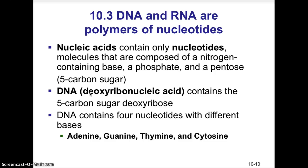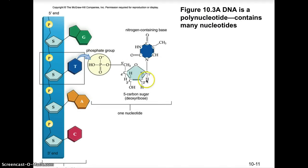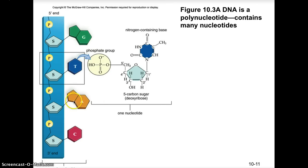DNA has 4 basic nucleotides: adenine, guanine, thymine, and cytosine — abbreviated A, G, T, and C. The typical structure of a nucleotide consists of the pentose sugar, a phosphate group, and a nitrogenous base. The backbone of a nucleic acid is an alternating sugar-phosphate chain, with one of the 4 nucleotides coming off the 5-carbon sugar.